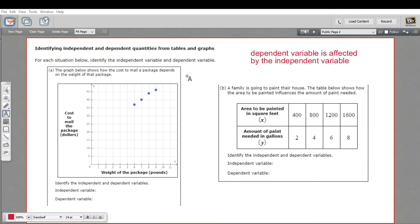In this problem, we are trying to distinguish between what are called dependent and independent quantities or variables. When you have a linear equation like these, one variable depends on the other variable.